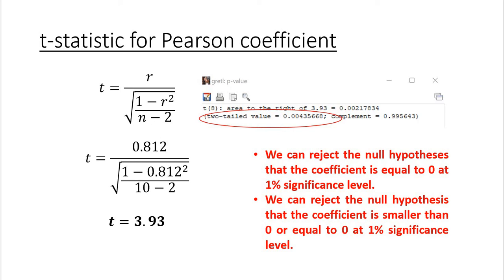Yes, we can indeed conclude that there is a strong, positive, linear relationship between the period of attending therapy expressed in months and self-reported subjective well-being. That was it for Pearson correlation coefficient. In the next video, I will tell you how we deal when at least one of the assumptions listed at the beginning of this video is not fulfilled — so what is the alternative.